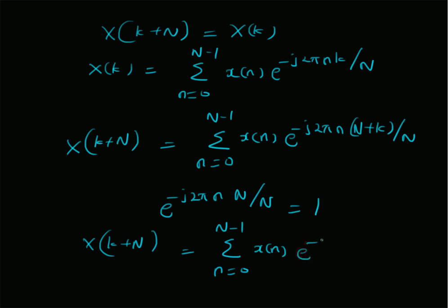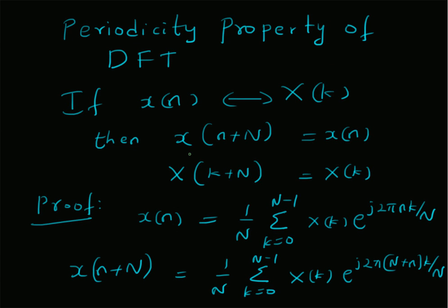Hence, X of k plus N is equal to the sum n equal to 0 to N minus 1, x of n, e power minus j 2 pi n k by capital N, which is indeed equal to, by definition, X of k. So this proves the periodicity of the DFT sequence. Therefore, we have proved that for N-point DFT sequences, both the time domain function and the frequency domain function, that is, x of n and X of k, are periodic functions with period equal to the value N. Thanks for watching.